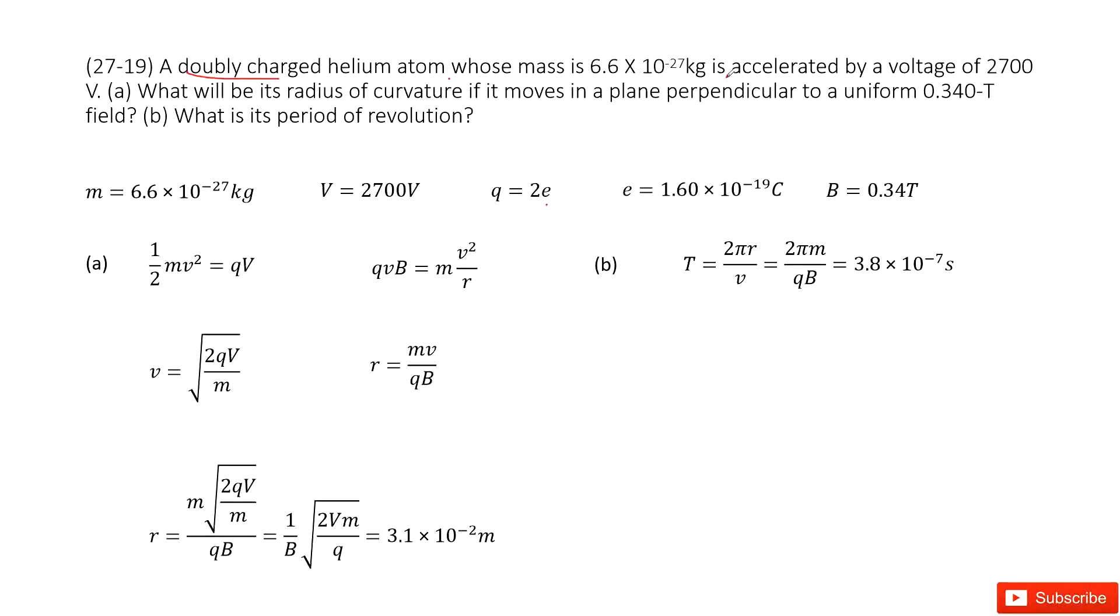The mass is given. It is accelerated by a voltage. And then they ask you what will be its radius for the circular motion if it is in the magnetic field like 0.34 Tesla.